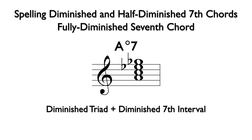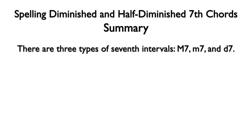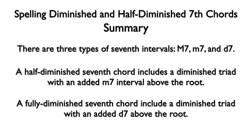An interesting and important fact about fully diminished 7th chords is that they include all minor 3rds. This will be important for topics we will study in the future, but it can also be helpful when notating the chords. To summarize: there are three types of 7th intervals — major 7ths, minor 7ths, and diminished 7ths. A half-diminished 7th chord includes a diminished triad with an added minor 7th above the root. A fully diminished 7th chord includes a diminished triad with an added diminished 7th above the root.